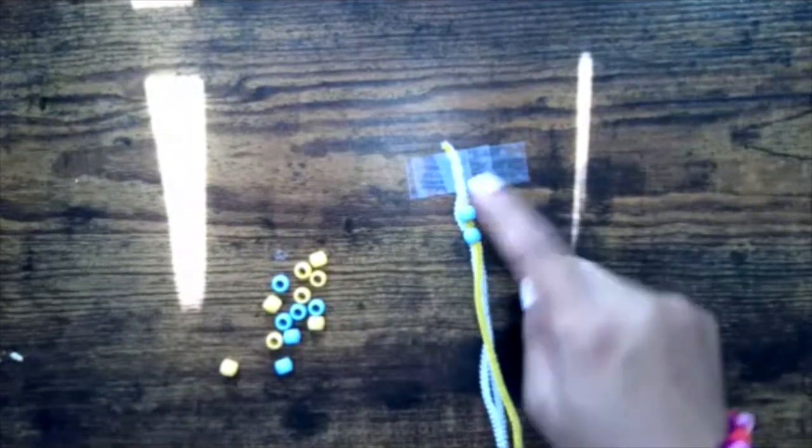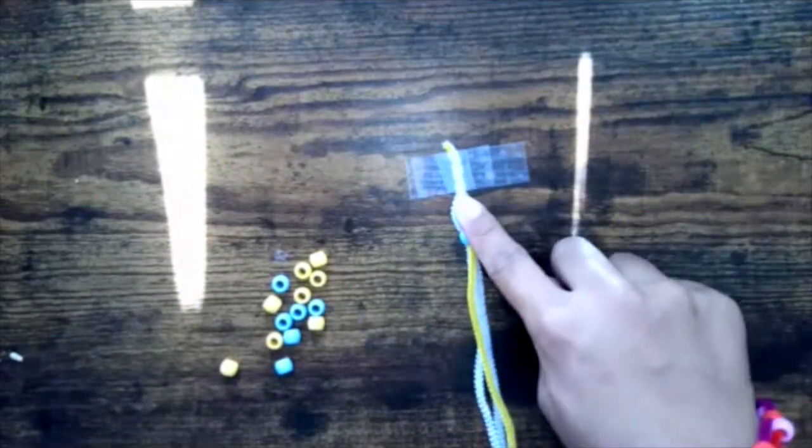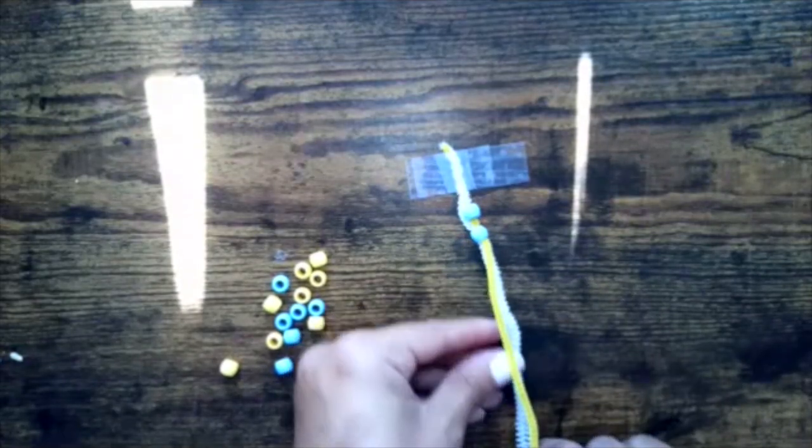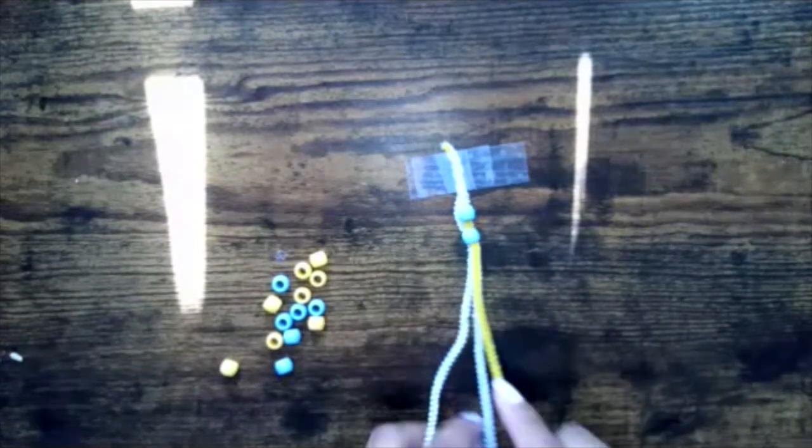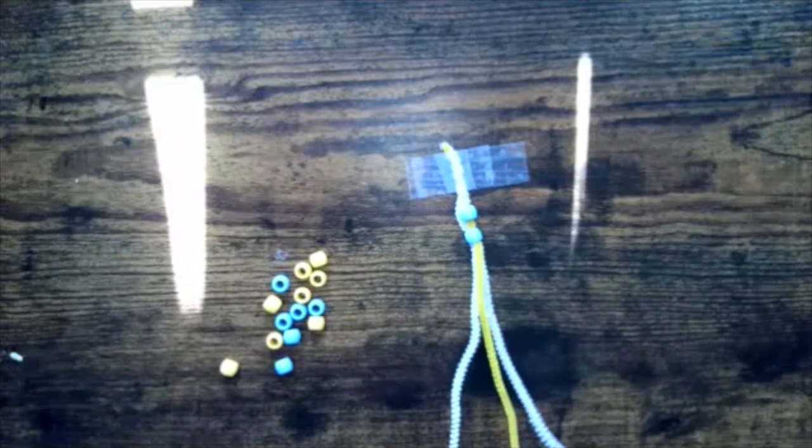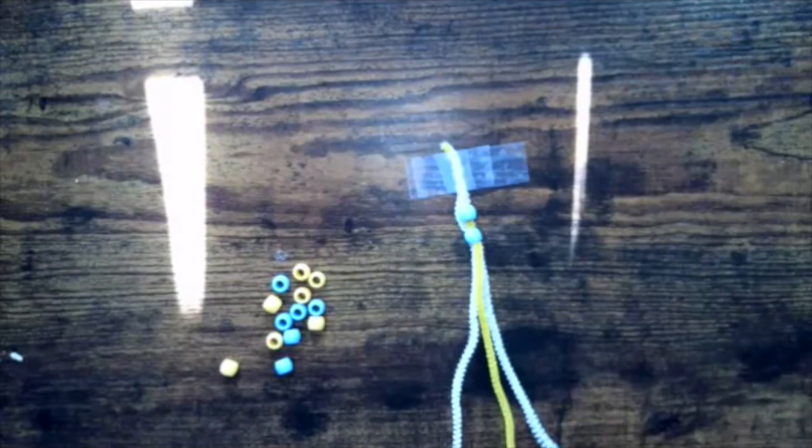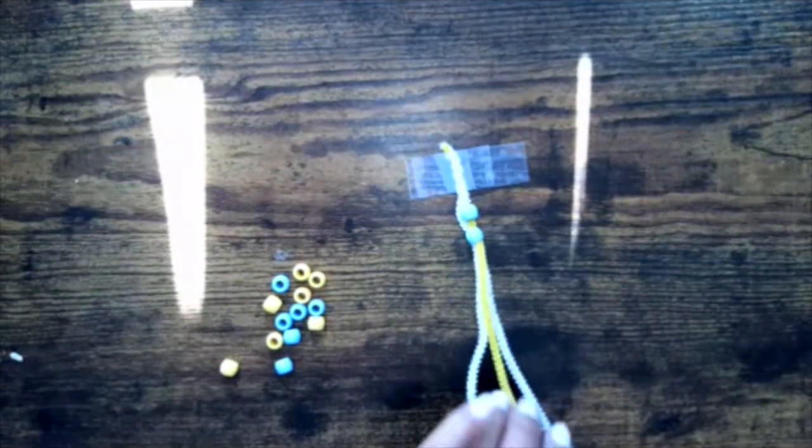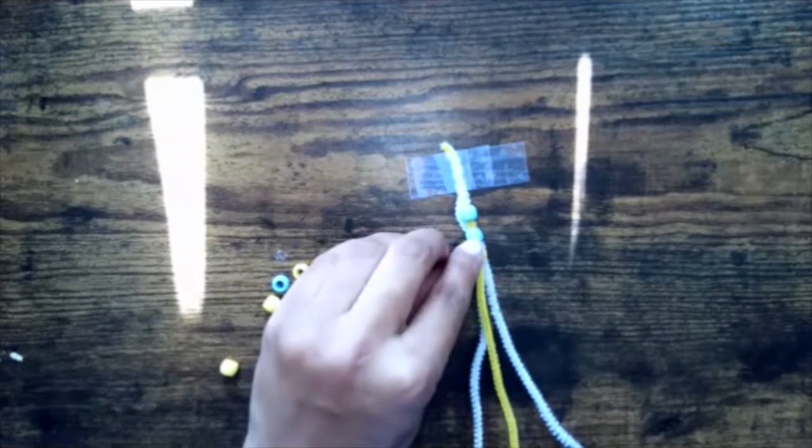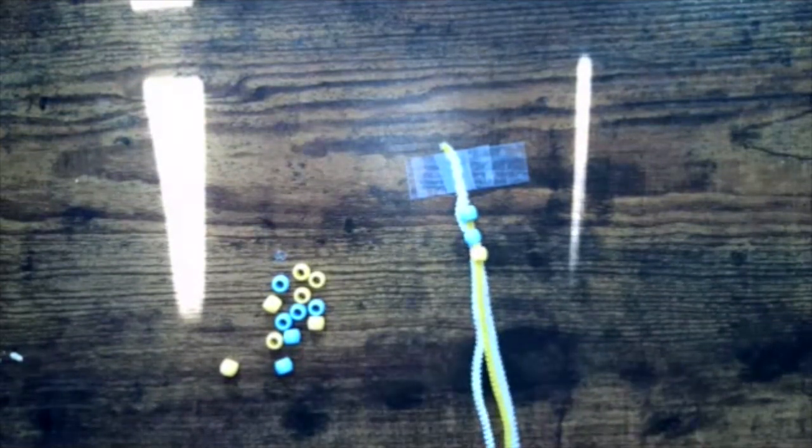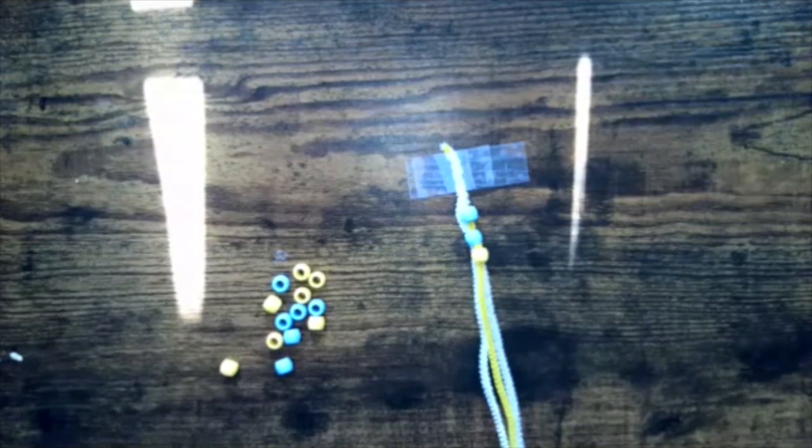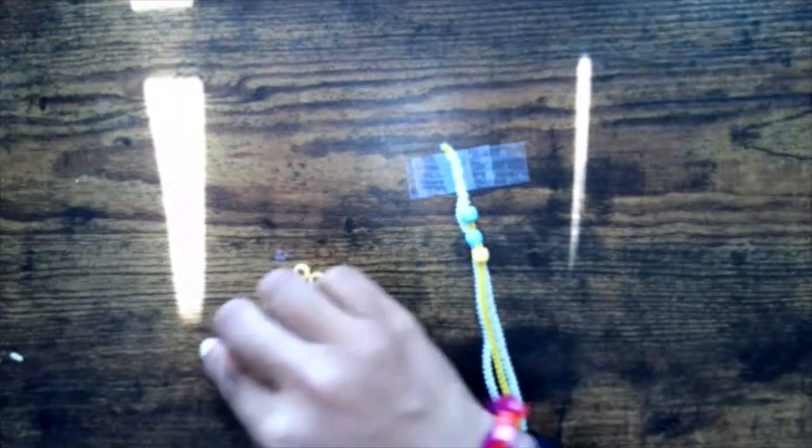So your first bead should be at a higher angle and then your second bead should be a little bit lower, and you're going to continue that pattern. So you're going to go back to your middle pipe cleaner, and that is my yellow one, and I'm going to feed a bead onto just the middle one. And then I'm going to gather all three of my pipe cleaners and feed my next bead onto all three of them.